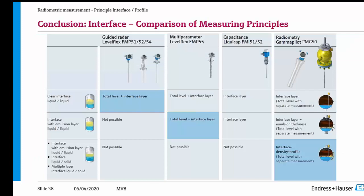As a conclusion, we have all these different principles available: guided wave radar, multi-parameter guided radar plus capacitance, capacitance principle only, or the radiometric principle. Guided radar is the preferred choice if there's a clear interface. The multi-parameter combination of TDR and capacitance is the preferred choice for interface with small emulsion layers. If it comes to multiple emulsion layers or emulsion layers bigger than 50 mm, then the nucleonic system is the preferred choice.